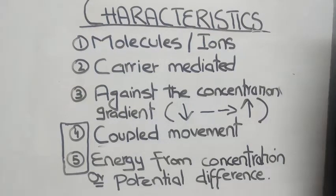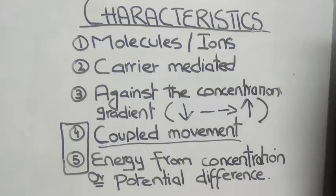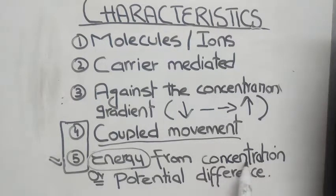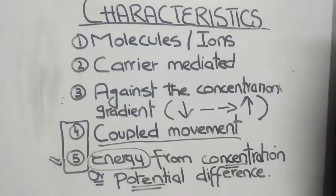In secondary active transport, molecules or ions have coupled movement, meaning two different types of molecules or ions will be moving across the membrane at the same time, but their direction may vary — either in the same direction or in different directions. The fifth characteristic is that energy for the movement is derived from the concentration or potential difference created across the cell membrane, whereas in primary active transport this energy was derived from the direct breakdown of ATP.